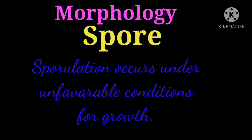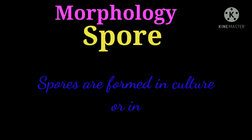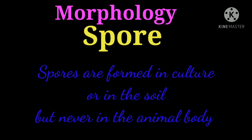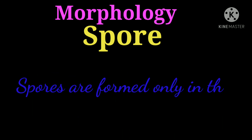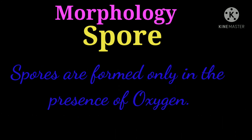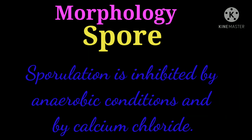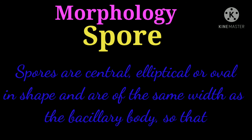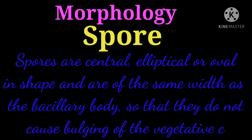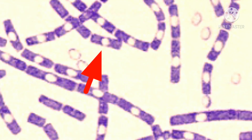Spores: Bacillus anthracis can form endospores. Sporulation occurs under unfavorable conditions for growth. Spores are formed in culture or in the soil, but never in the animal body during life. Spores are formed only in the presence of oxygen; sporulation is inhibited by anaerobic conditions and by calcium chloride.